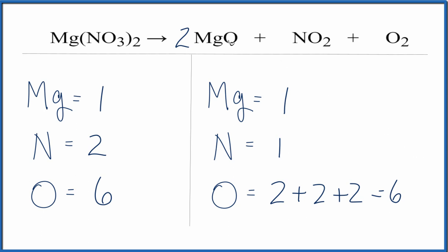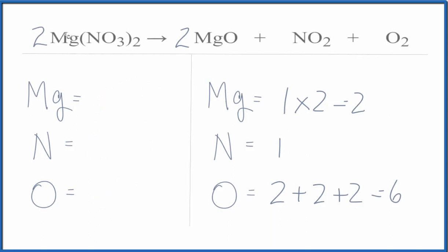But the magnesium — I need to update that as well, because I now have two magnesiums on the product side and only one on the reactant side. So those aren't balanced. Let's fix the magnesiums — we'll put a two in front of the Mg(NO₃)₂. So we have one times two: two magnesiums.